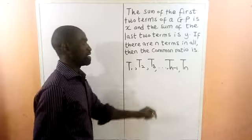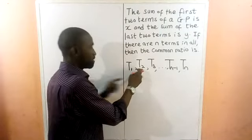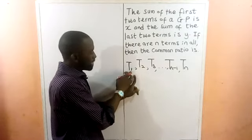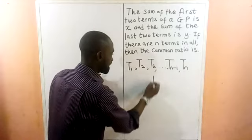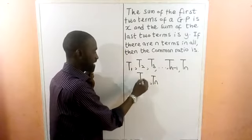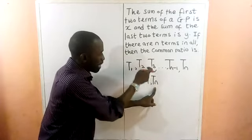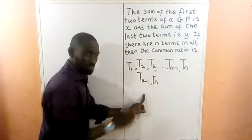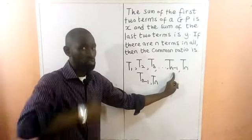How did we get TN minus 1 and TN? The first term corresponds to index 1, so T2 means T3 minus 1 gives us 2, and T1 means 2 minus 1 gives 1. So if T3 is now TN, the term before it is TN minus 1. If our last term is TN, the one before is TN minus 1, which is the term just before the last.